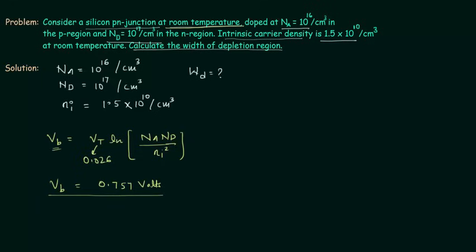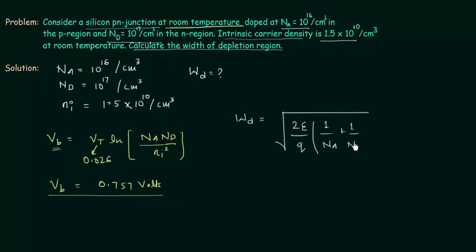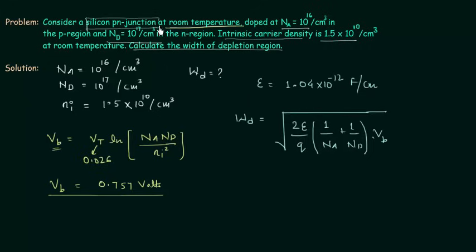Now we put this into the formula for width of depletion layer: WD = sqrt( (2ε/q) · (1/Na + 1/Nd) · Vb ). We have Vb = 0.757 V, epsilon = 1.04 × 10^-12 F/cm (silicon PN junction), q = 1.6 × 10^-19, Na = 10^16, and Nd = 10^17. We have everything needed to proceed.